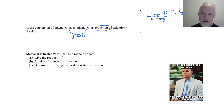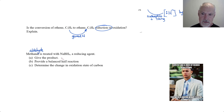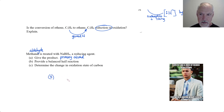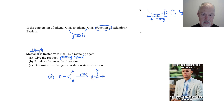Next one: methanol is treated with a reducing agent — give the product. Well, methanal is an aldehyde. If I reduce it, I convert it to a primary alcohol. Let's look at the structure for that. Methanal would have this particular structure. I am now going to put in my reducing agent and produce a primary alcohol — it would be a one-carbon alcohol. So it would look like this. That, by the way, is methanol.